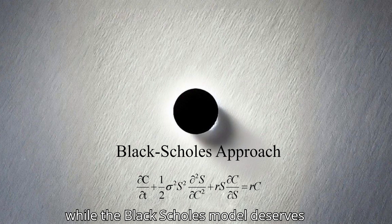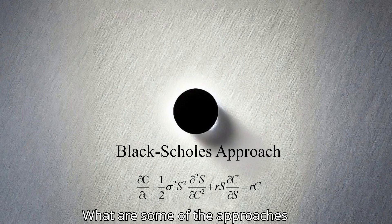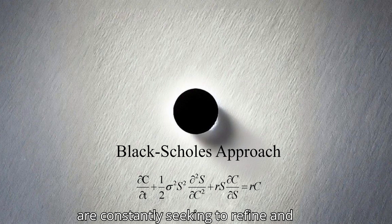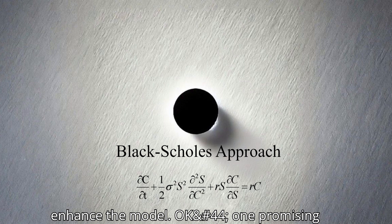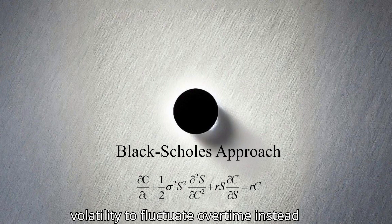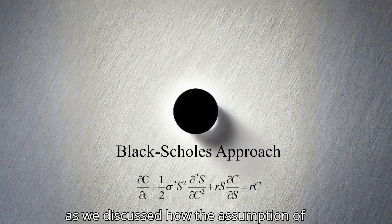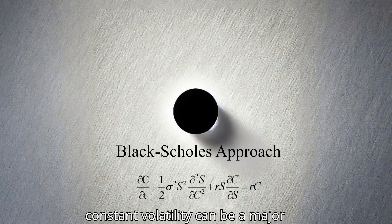So while the Black-Scholes model deserves recognition for revolutionizing option pricing, it's essential to view it as a stepping stone rather than a final destination. The quest for a perfect option pricing model continues. What are some of the approaches researchers are exploring to improve upon the Black-Scholes framework? Researchers are constantly seeking to refine and enhance the model. One promising avenue is incorporating stochastic volatility, which allows for volatility to fluctuate over time instead of remaining constant. This better reflects the dynamic nature of market volatility observed in real-world trading.